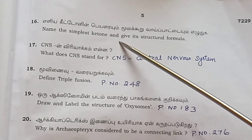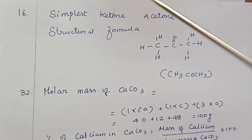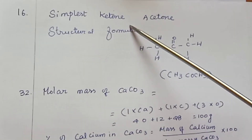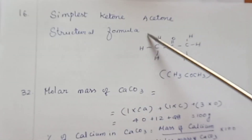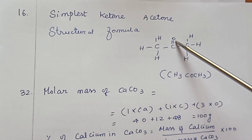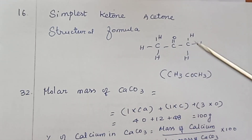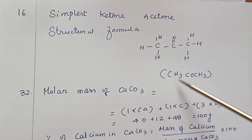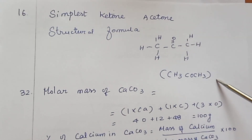Question 16: Name the simplest ketone and give its structural formula. The simplest ketone is acetone. Structural formula: CH3COCH3.